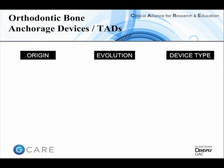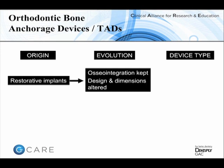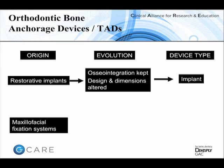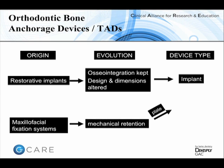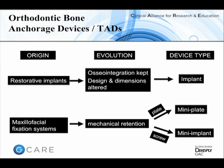We can view bone anchorage devices or TADs in several categories according to their evolution. If one modified restorative implants relying on osseointegration and reduced their dimensions, that produces an orthodontic implant such as the original palatal implants used at the turn of the century. However, if one took plating kits from maxillofacial surgery — which rely on mechanical retention, not osseointegration — and modified the plate, you produce a mini-plate, and if you modify the screw, you produce a mini-screw or mini-implant.